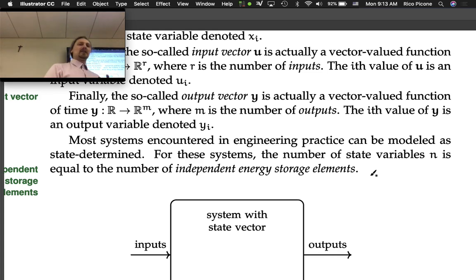These were our energy storage elements. The number of independent energy storage elements in the system equals the number of state variables n. We'll talk more about independence. Most of the time elements are independent. Usually if you see six different energy storage elements, you have six state variables. Occasionally they'll show up dependent on each other, and then you have one fewer state variable.